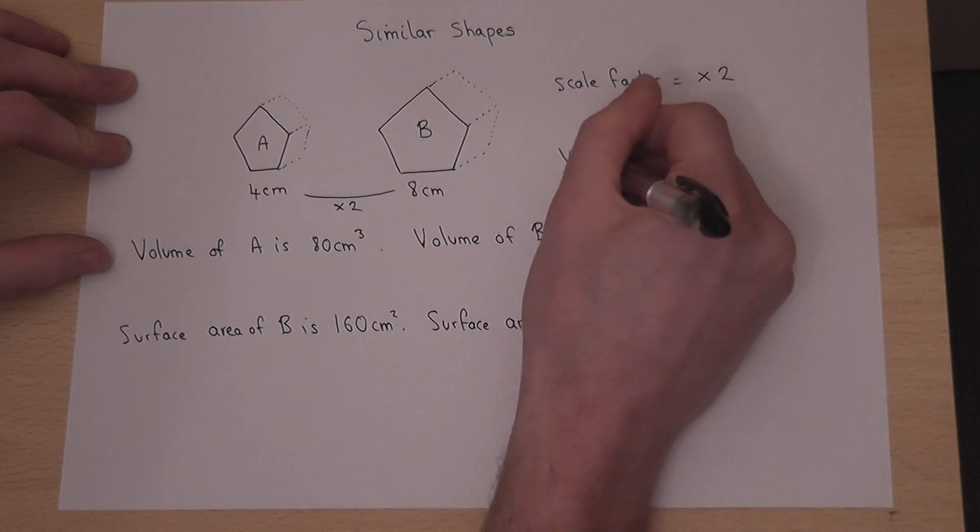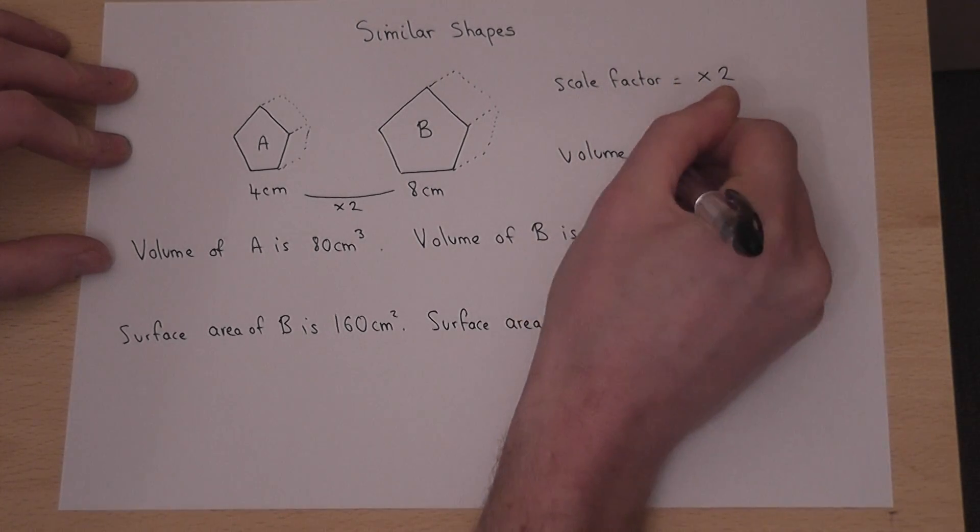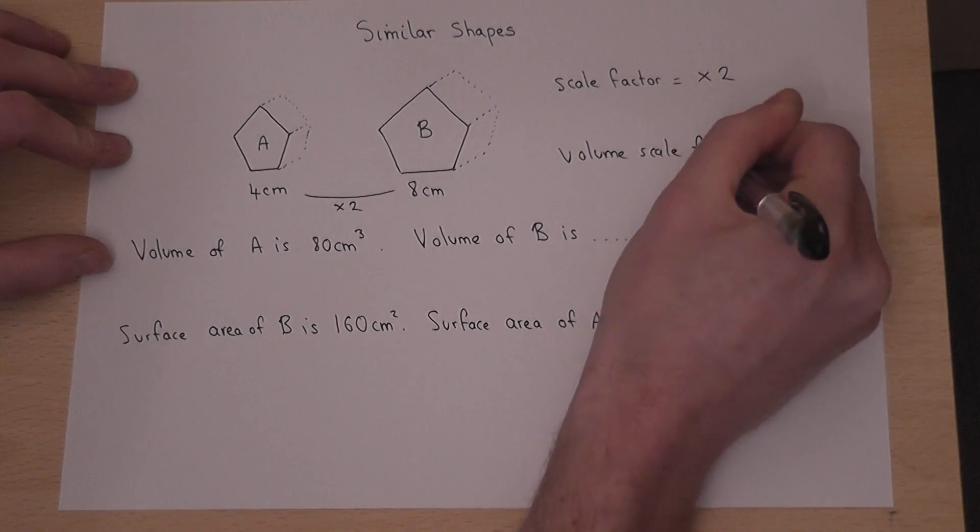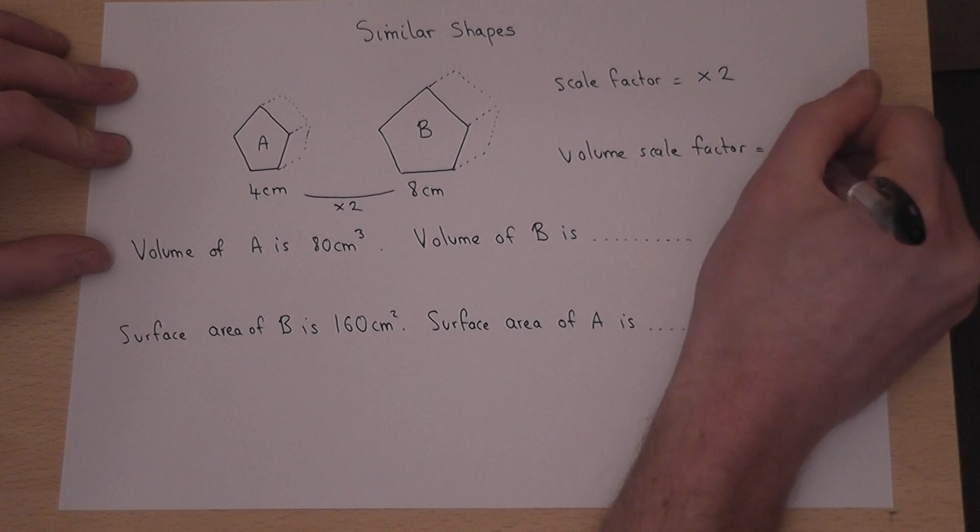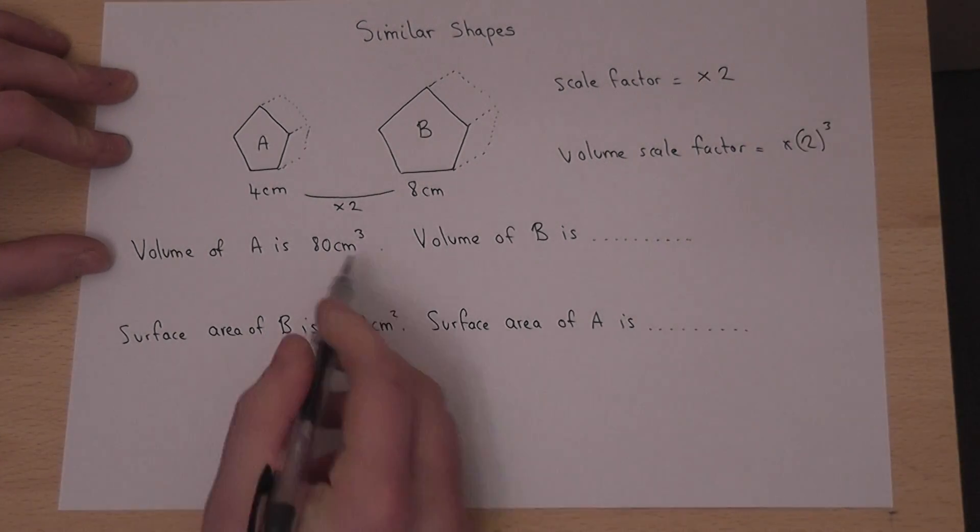Now to find the volume scale factor we don't just times by 2. We times by 2 cubed. The hint really is in the units.